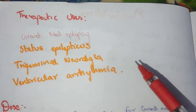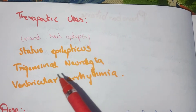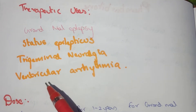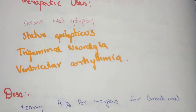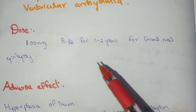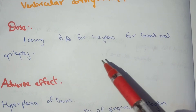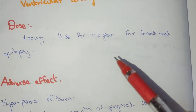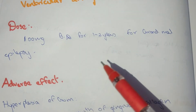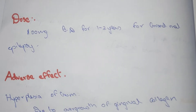The therapeutic uses of phenytoin sodium are: grand mal epilepsy, status epilepticus, trigeminal neuralgia, and ventricular arrhythmia. The dose is 100 milligrams BD, given for one to two years for grand mal epilepsy.